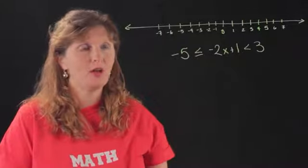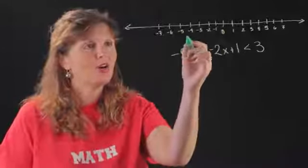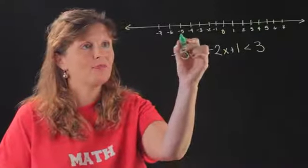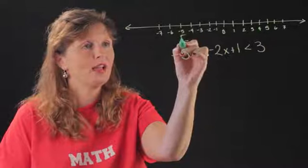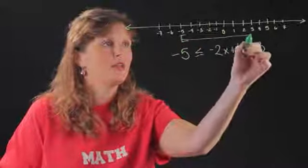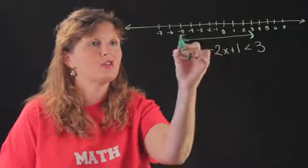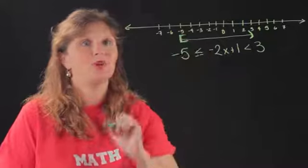I picked one that's a little bit more complex that goes in a range. So here we have negative 5 is less than or equal to negative 2x plus 1, and that's less than 3. So I'm going to start out with that.